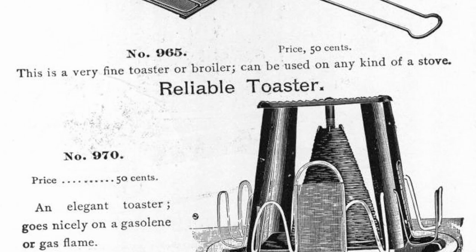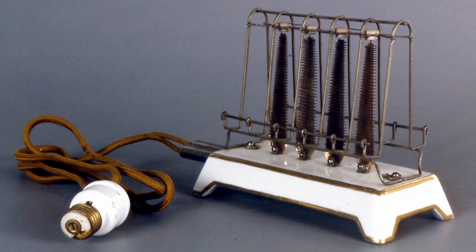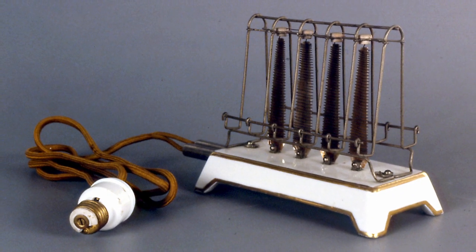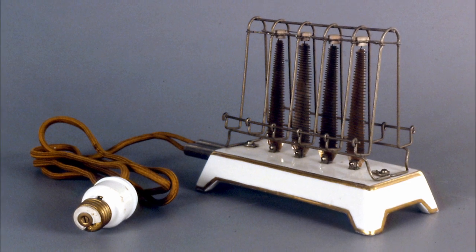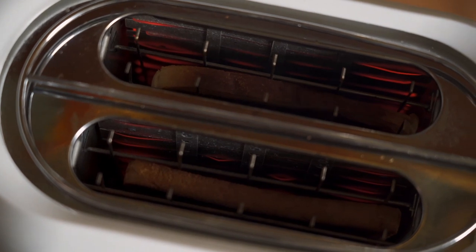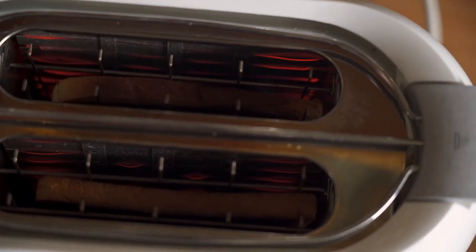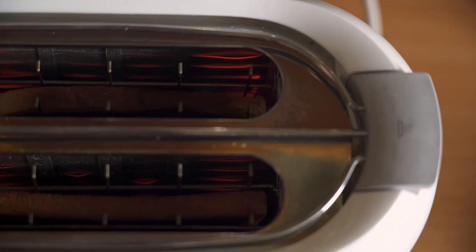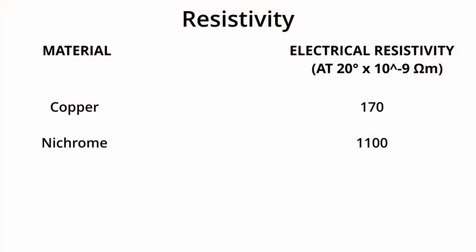The first recorded electric toaster was invented by a Scotsman called Alan McMasters in the 1890s. But the toaster wouldn't reach commercial success until after the invention of nichrome in 1906, by an American called Albert Marsh. Nichrome is the ideal heating element for reasons we discussed earlier.